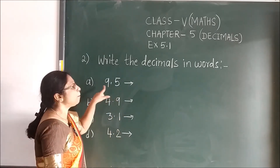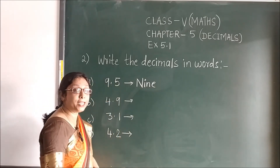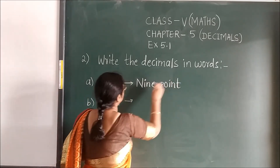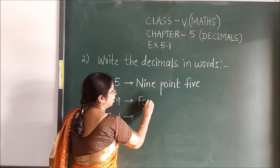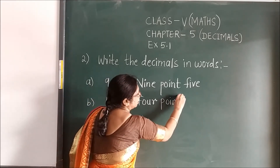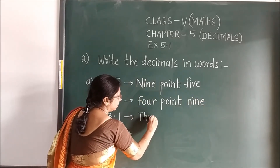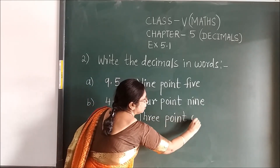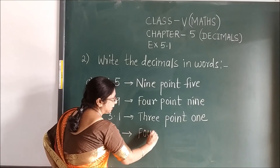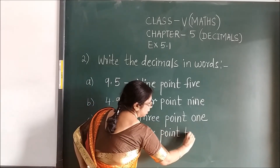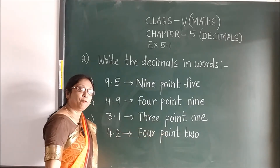Number 1: see before the point — the number is 9, so you write 9. Then point, so you write point. And then 5. Next: 4, point, 9. Then 3, point, 1. Then 4, point, 2. So in this way any decimal which is written in decimal form you can write in word form. Clear?